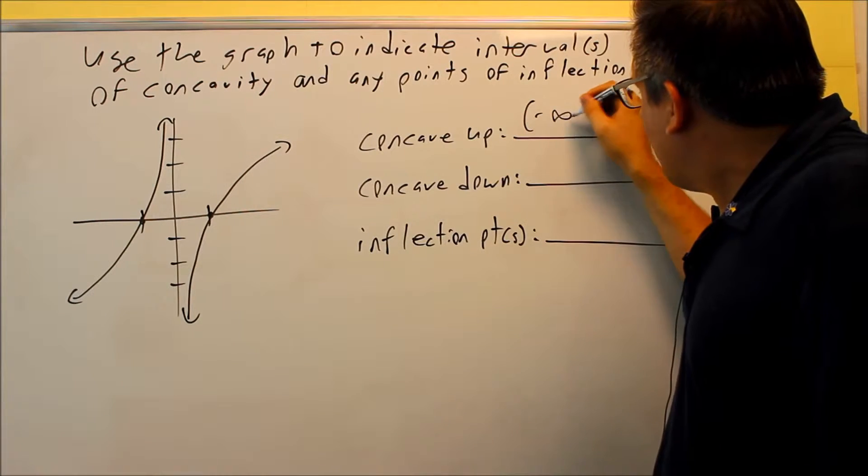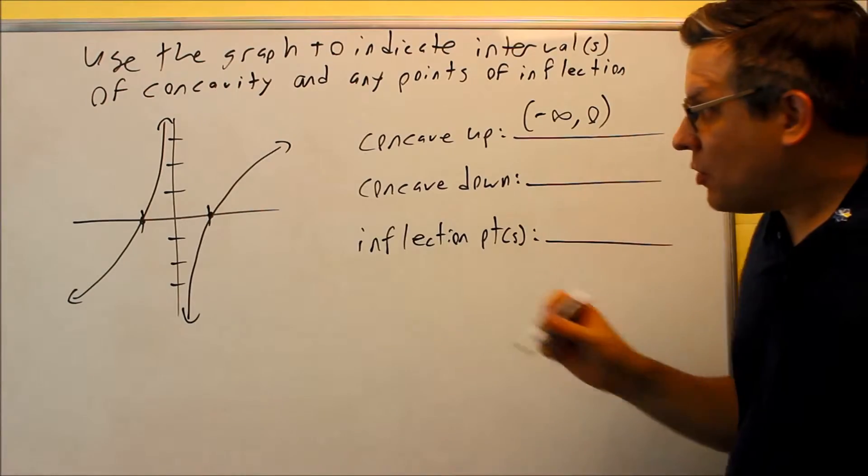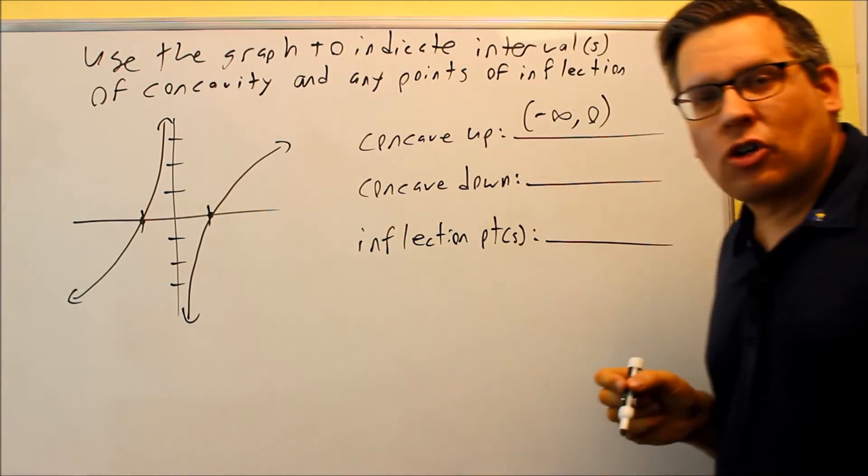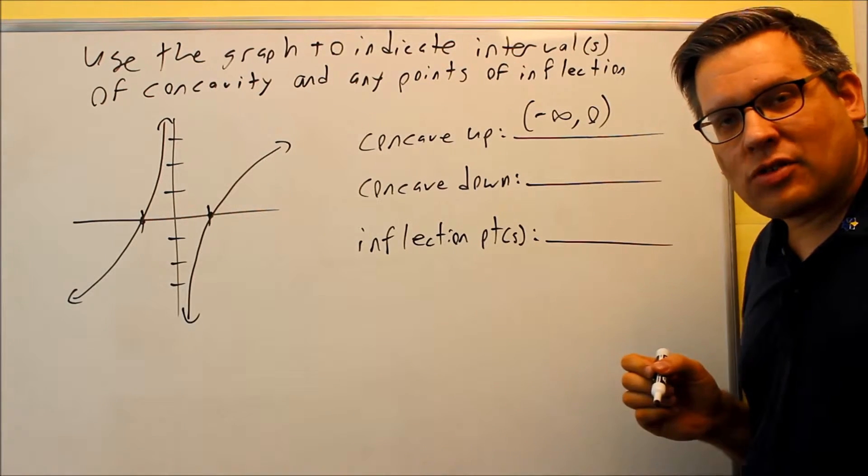And this time for sure 0 can't be included because we have a vertical asymptote, there's no points that are actually defined. So definitely for sure you need to make sure you have a parenthesis on that 0.